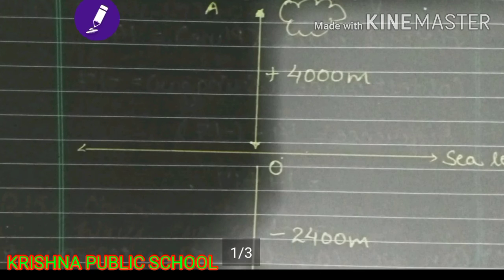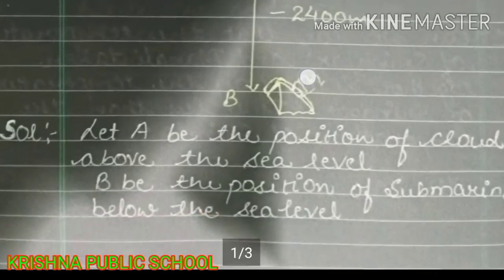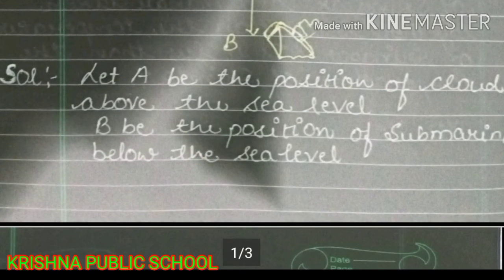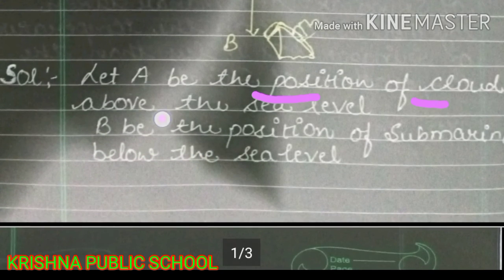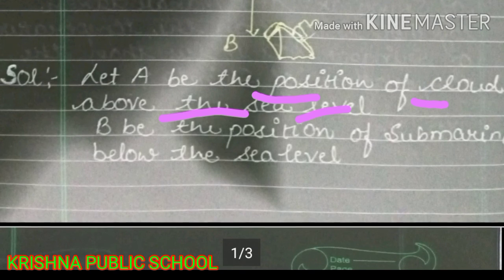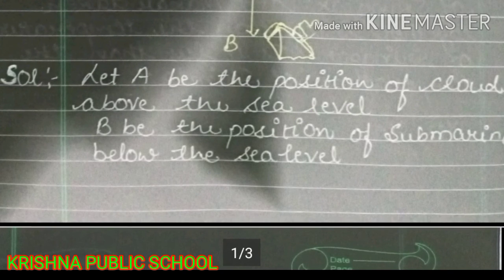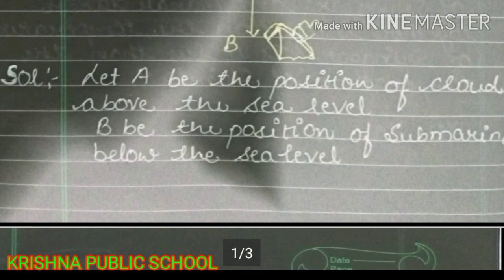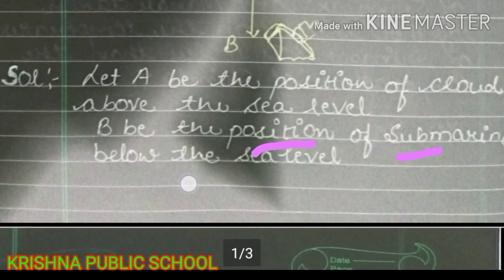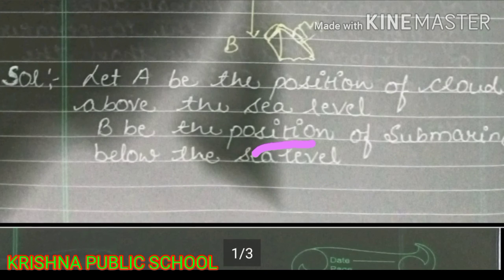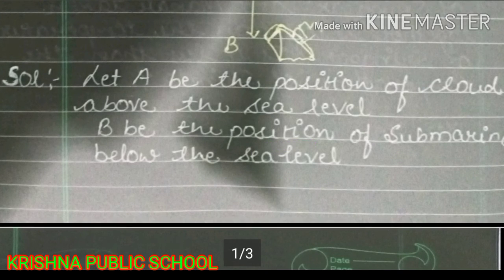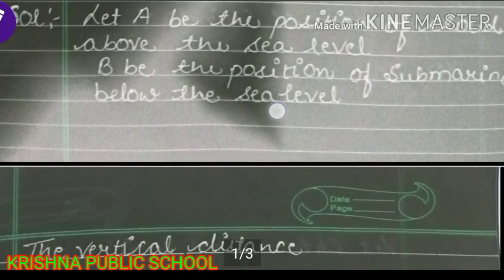This is our cloud above the sea level. Let A be the position of the cloud above the sea level. I suppose that position B is the submarine below the sea level.